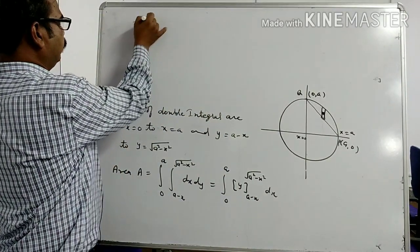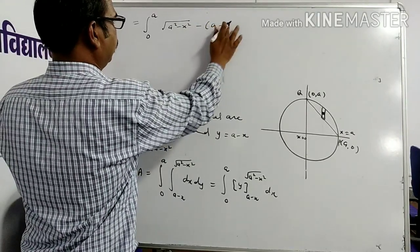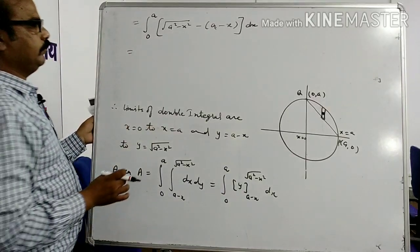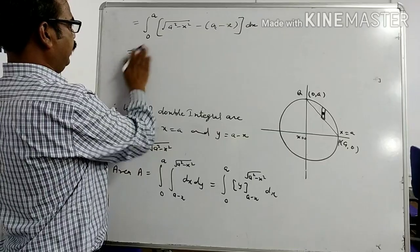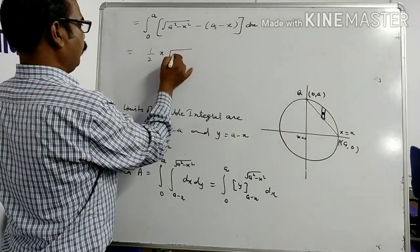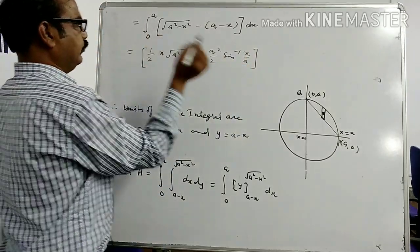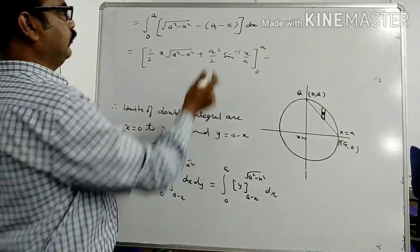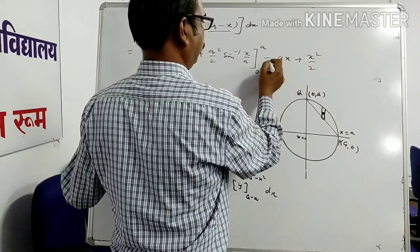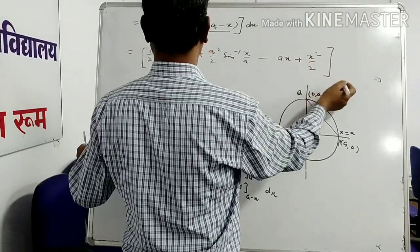Evaluating: A = ∫₀ᵃ [y] from (a − x) to √(a² − x²) dx = ∫₀ᵃ [√(a² − x²) − (a − x)] dx. Now we integrate this: the integration gives (1/2)[x√(a² − x²) + a² sin⁻¹(x/a)] from 0 to a, minus [ax − x²/2] from 0 to a.